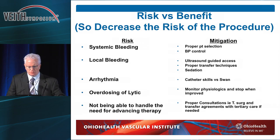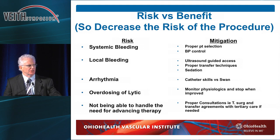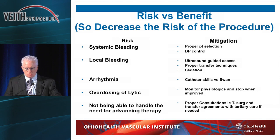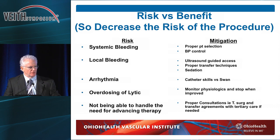So risk-benefit: decrease the risk of the procedure. What's the risk? Systemic bleeding — that means proper patient selection and controlling blood pressure. Sometimes I'll review cases where somebody had a bleed, and the blood pressure was 190 over 110 in the ICU and they were just leaving it like that. Local bleeding: use ultrasound-guided access. One of the reasons guidelines say don't do things is because of bleeding — get less bleeding by being better. You should be using ultrasound on venous access too, not just arterial. There are lots of vessels through that common femoral area or even the jugular.